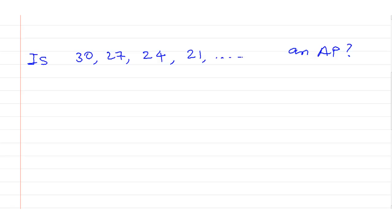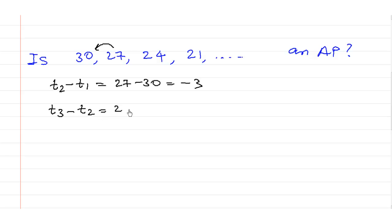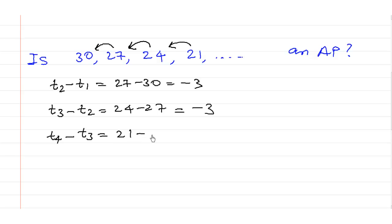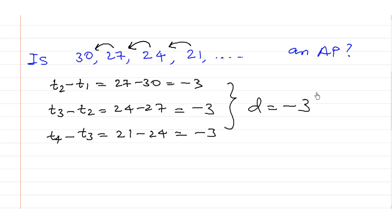Now let us understand the sequence 30, 27, 24, 21. The second term minus the first term — 27 minus 30 — gives us negative 3. The third term minus the second term — 24 minus 27 — is negative 3 again. And the fourth term minus the third term — 21 minus 24 — is again negative 3. The common difference is negative 3 because the numbers are decreasing. But this is still an arithmetic progression.